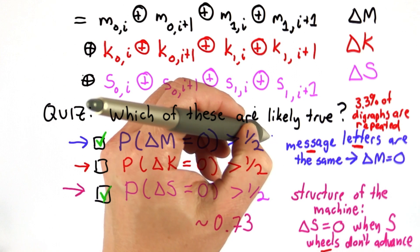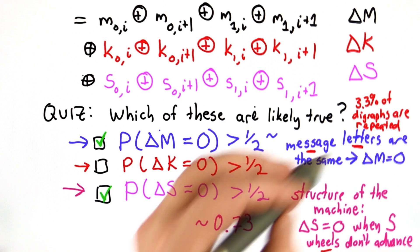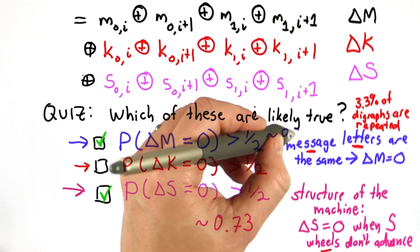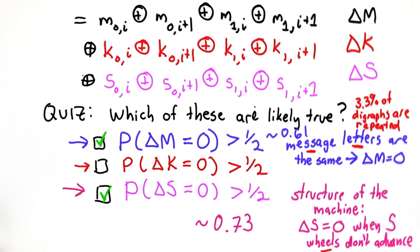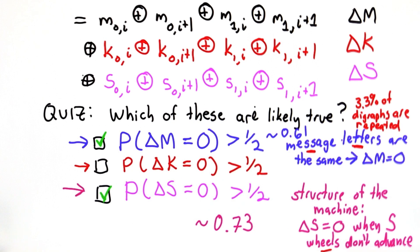That means the probability that the messages are equal, well, they could be equal for lots of other reasons, but this biases it towards being more likely to be 0 than non-zero. And it turns out that that's 0.061 probability for German.